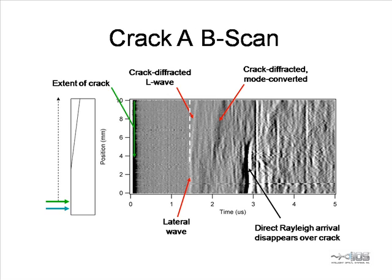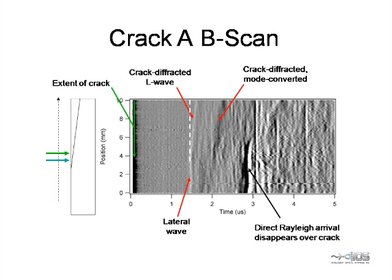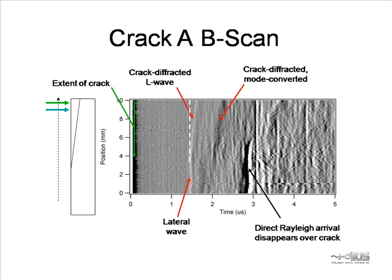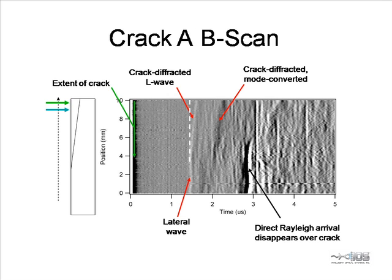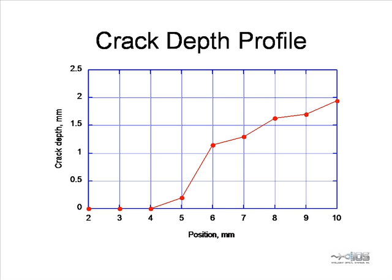This is a B-scan of the crack shown in the previous video. The crack starts at 4 millimeters and deepens at larger scan positions. The beams are scanned together along the crack. Note that the direct Rayleigh wave arrival disappears as the crack opens. The crack manifests itself as an increasing time delay of the lateral wave, and we also observe a mode-converted arrival. Using the B-scan data and the measurement scheme described earlier, we have plotted the crack depth versus position. The crack deepens along the scan and reaches a depth of 2 millimeters at the end of the scan.